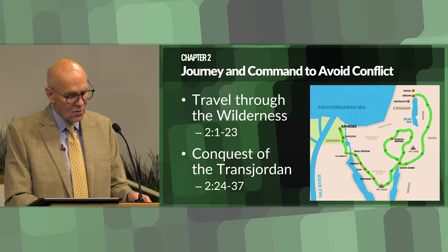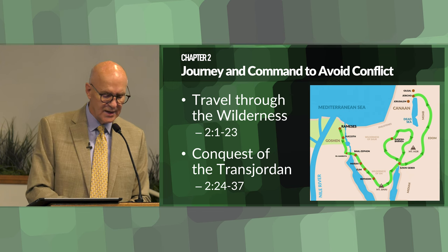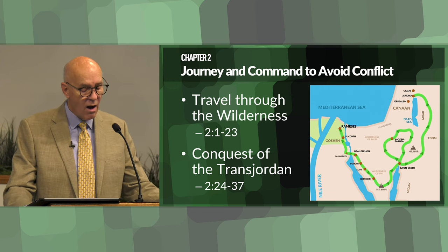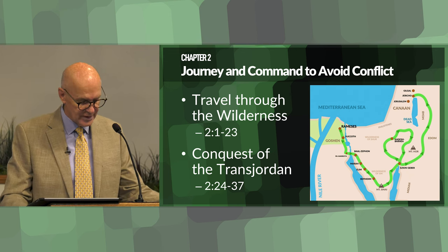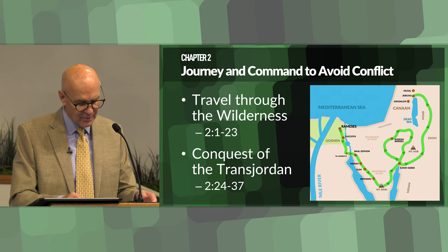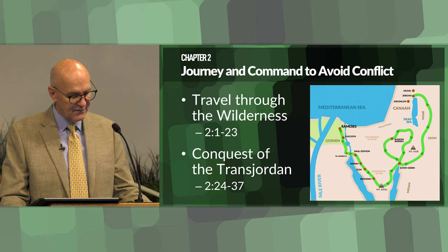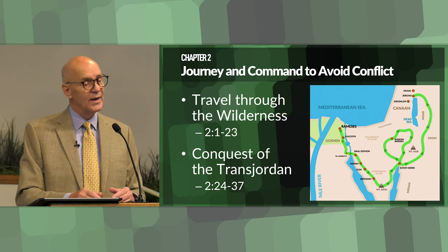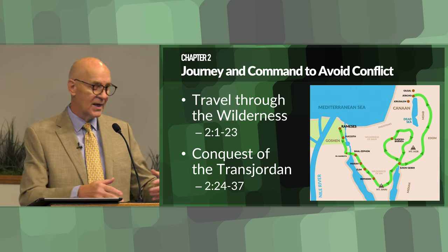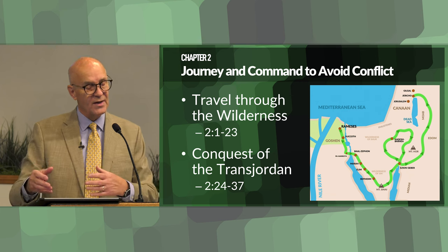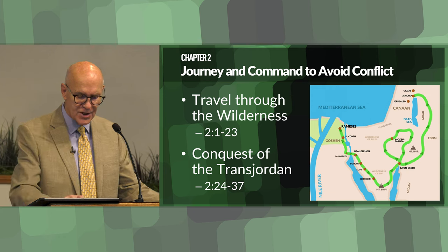He also discusses the conquest of the Transjordan — Moses recounts the battles against Sihon king of Heshbon and Og king of Bashan, emphasizing God's role in their victories. This prepares the Israelites for future conquests in Canaan by demonstrating God's power and faithfulness. He recounts battles won in the past to convey that God helped them win before and will be there to help them win those battles in the future as well.